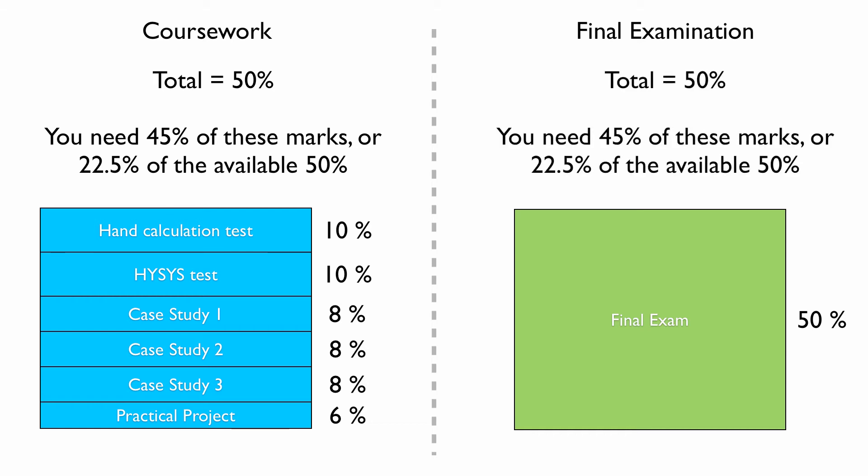It's exactly the same for the final exam, which is worth 50%. You need to get a minimum of 45% of the marks that are available on the final exam, which equates to 22.5% of the available 50%. You do not need to get 45% out of 50% on the final exam to pass the unit.